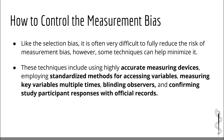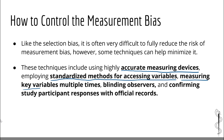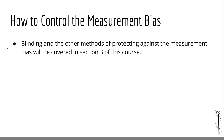So what can we do to decrease the risk of measurement bias? Like the selection bias, it is often very difficult to fully reduce it. However, some techniques can help minimize it: using a highly accurate measuring device, employing standardized methods for assessing variables, measuring key variables multiple times, blinding observers, and confirming study participant responses with official records. The most important way to decrease the risk of measurement bias is to ensure that the techniques used to measure study variables are reliable and highly accurate.